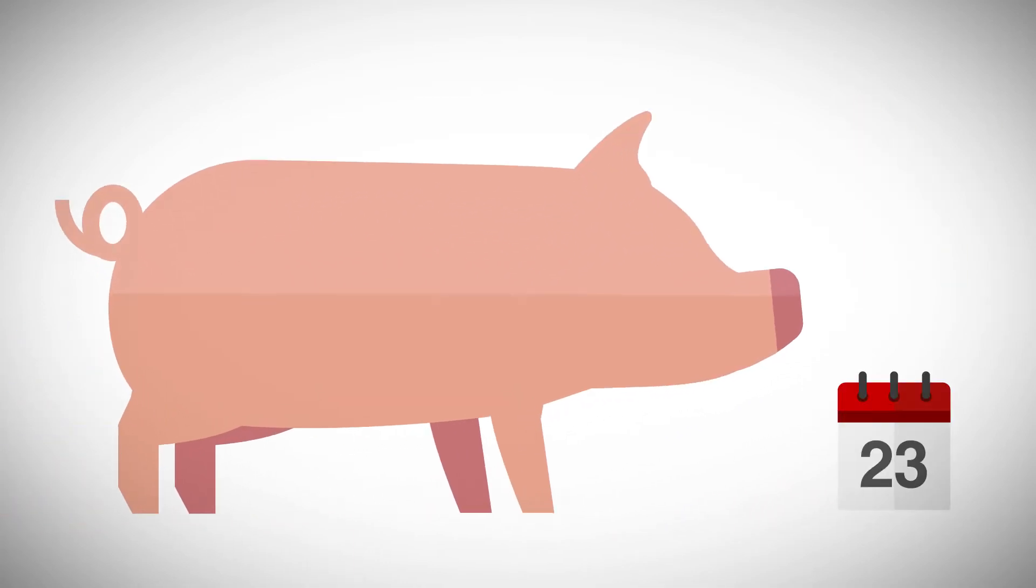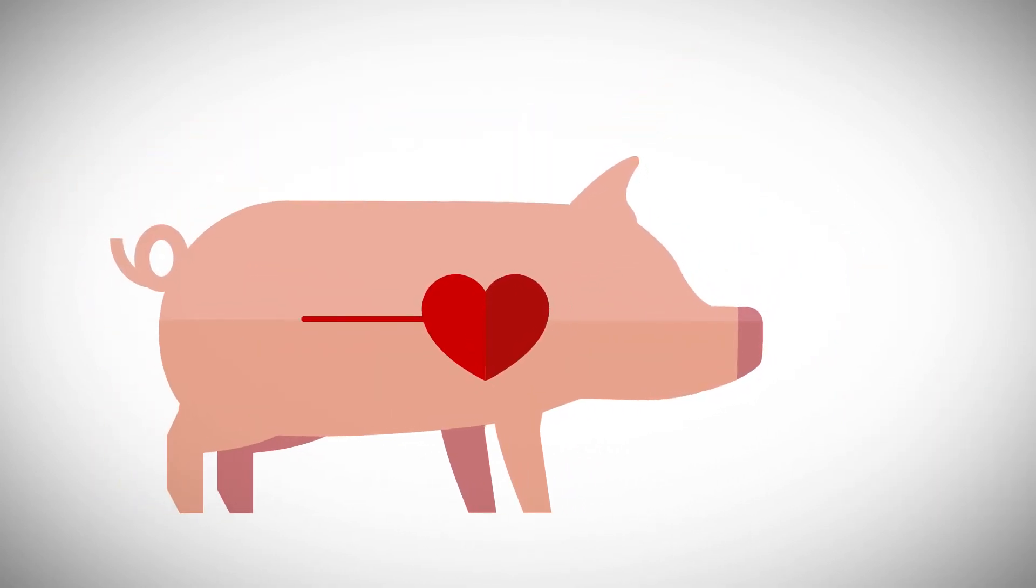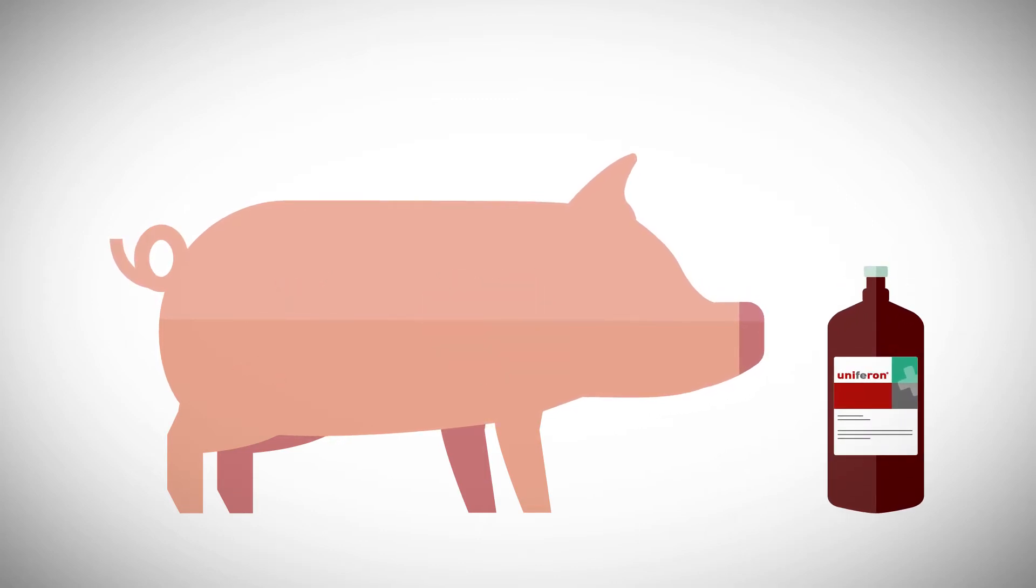A piglet grows six times its size in three to four weeks. To sustain its growth, the piglet needs blood to carry oxygen around the body. But the piglet is born with low iron levels and there is little iron in sow's milk. Therefore, the piglet needs iron supplementation as iron is the crucial element in the manufacturing of hemoglobin.